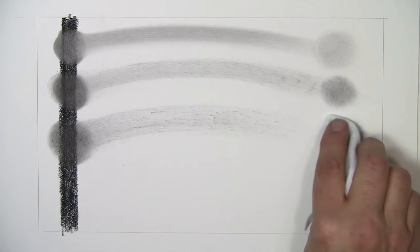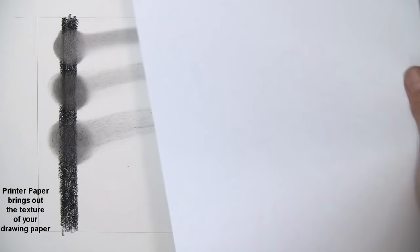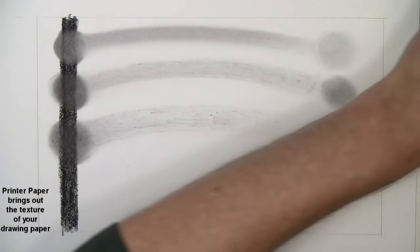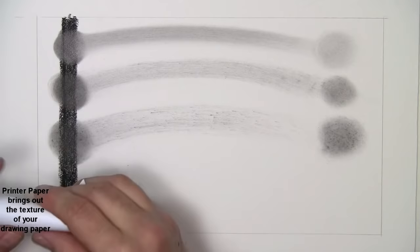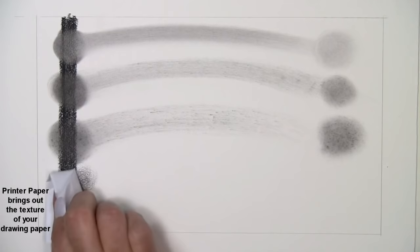The next one I'll show you is actually a piece of printer paper. Just a regular piece of paper that I'm going to tear into a size that I can manage. This one I just wrap around my finger a little bit. I'll do the same test here. What this blender does is bring out the texture of the paper more. So depending on how smooth or rough your paper is, this creates a totally different texture.